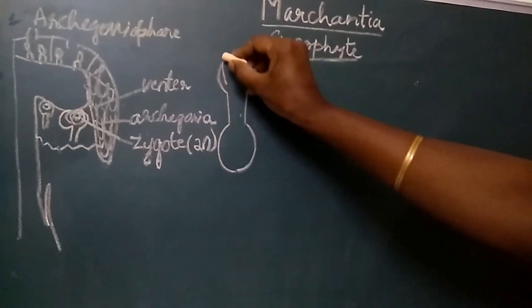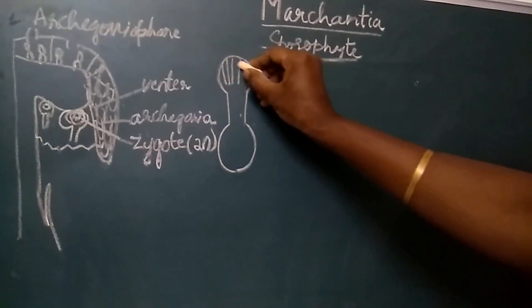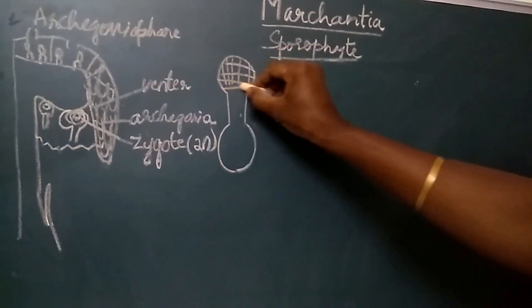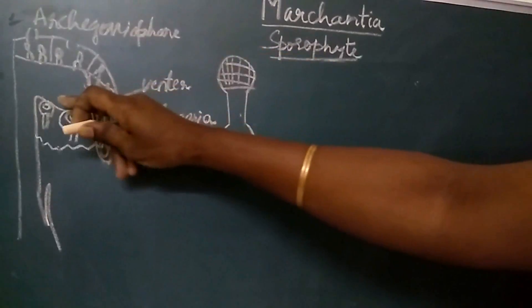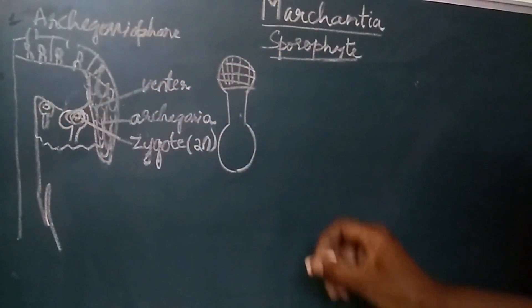The foot is multicellular and massive, and gets embedded in the tissue of the archegoniophore.